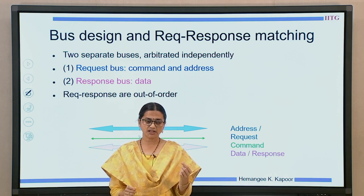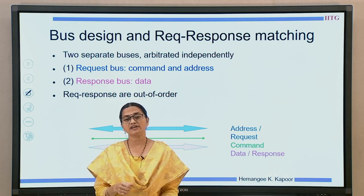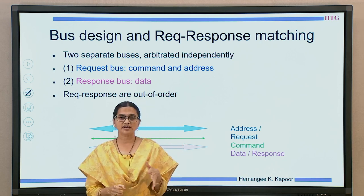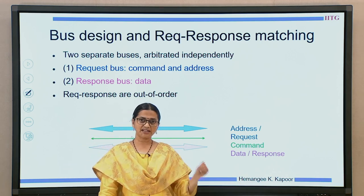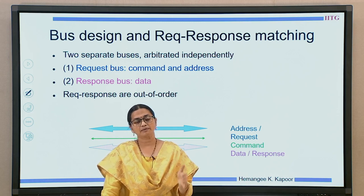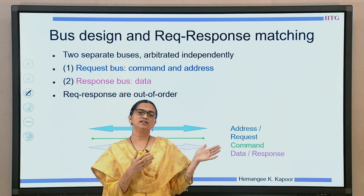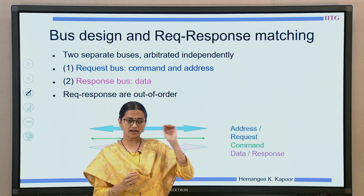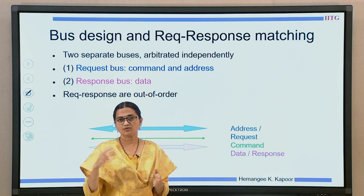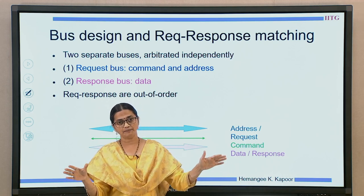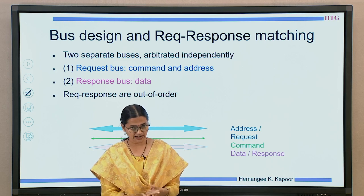First, for sending the request, I need a bus for which I will ask for permission — that is the request bus. On this request bus, we are going to give the address and the command, what has to be done. When this address and command goes onto the bus, there will be other processors and cache controllers — the snoopers — sitting there, as well as the memory.